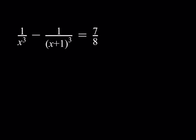We have 1 over x cubed minus 1 over x plus 1, quantity cubed, is equal to 7 over 8, and we're supposed to solve this equation. I know some of you will try to guess and check and you could probably find a solution that way, but I'm going to show you the algebraic approach — it's a very cool approach.